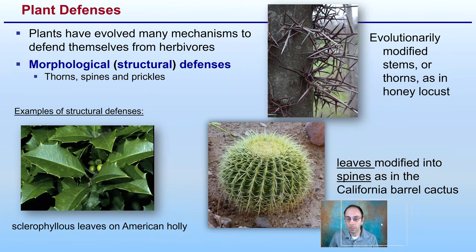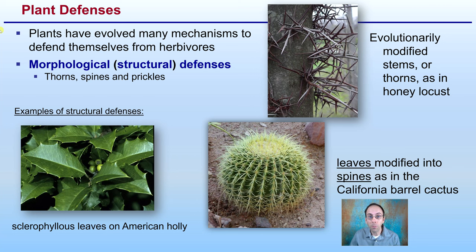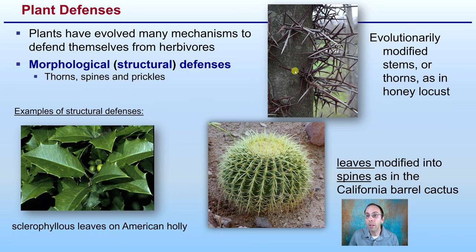Starting with the plant defenses. Plants have evolved many mechanisms to defend themselves from herbivores. They have developed morphological, or structural, defenses such as thorns, spines, and prickles — all of these are deterrents from an animal coming in and feeding on them. We see the sharpness of the leaves of the American holly, evolutionarily modified stems or thorns on the honey locust, and leaves modified into spines in the barrel cactus.